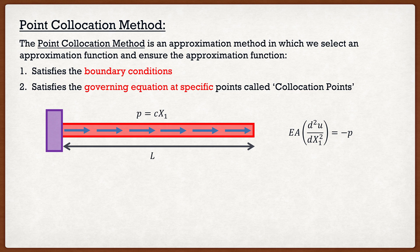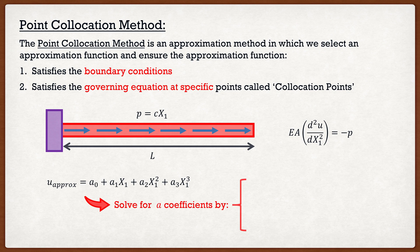If I have this beam and this governing differential equation, I'm going to approximate my solution using a third-order polynomial. Now it doesn't have to be third order — we can have a fourth order, sixth order, whatever you want. For this particular example I'm going to pick a third order where my approximate displacement solution is equal to a0 plus a1 times x1 plus a2 times x1 squared plus a3 times x1 cubed. We're going to solve for these a coefficients just like we would with the Rayleigh-Ritz method or the virtual work method.